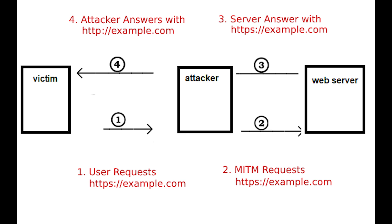Then the attacker will be able to see the data traffic. The thing is, if the user is using HTTPS, the traffic will be fully encrypted. But if the attacker strips the SSL and the connection falls back to HTTP, all the data will be in plain text.